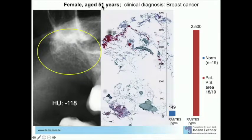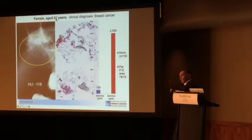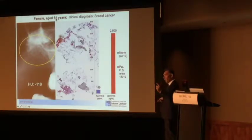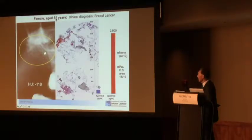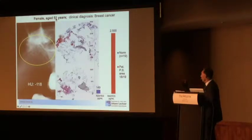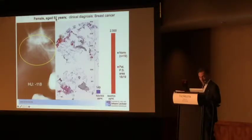Here is an example. This is an OPG — two-dimensional. When you measure the Hounsfield units here, you get up to minus 1100. Minus 100 is below the x-ray attenuation of water — water is zero — so the consistency expected here is also below water. These red spots are the RANTES-expressing cells inside this bone marrow. When we measure the RANTES expression here on this side, we have 2,500 compared to 150 in healthy jawbone — a 20-fold higher expression.